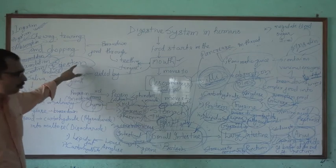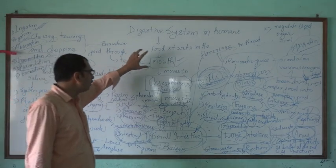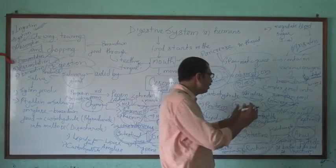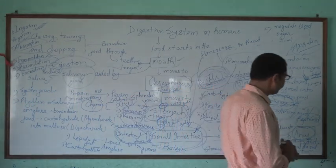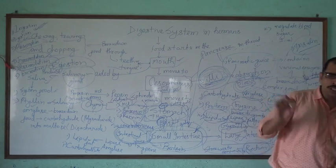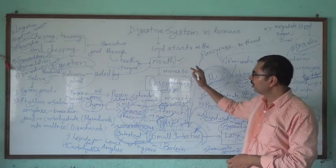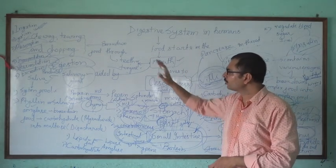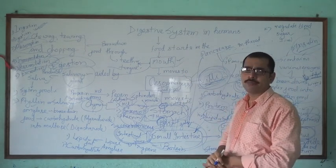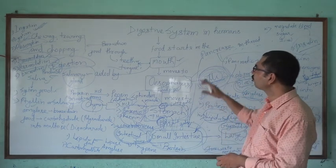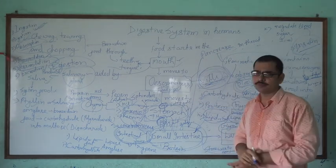So digestion is concluded in these terms — ingestion, digestion, absorption, transportation, assimilation, and egestion. These are the common terms linked to the digestive tract. This is the basics of the digestive tract.